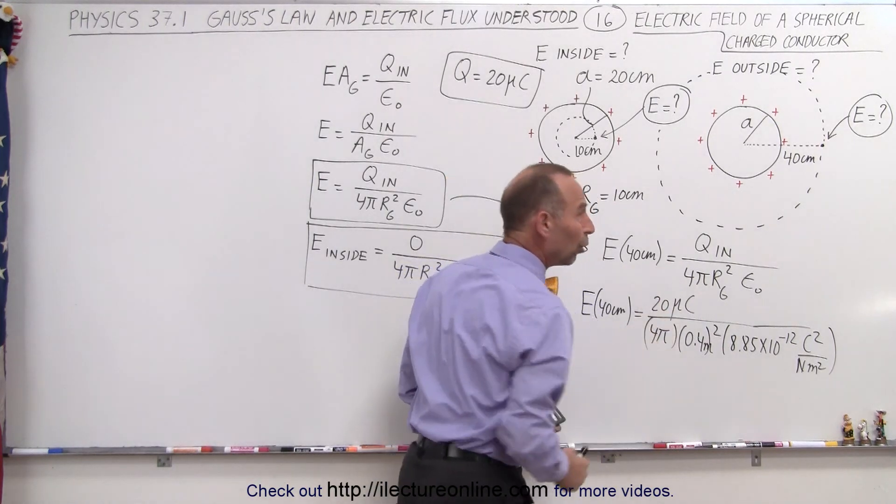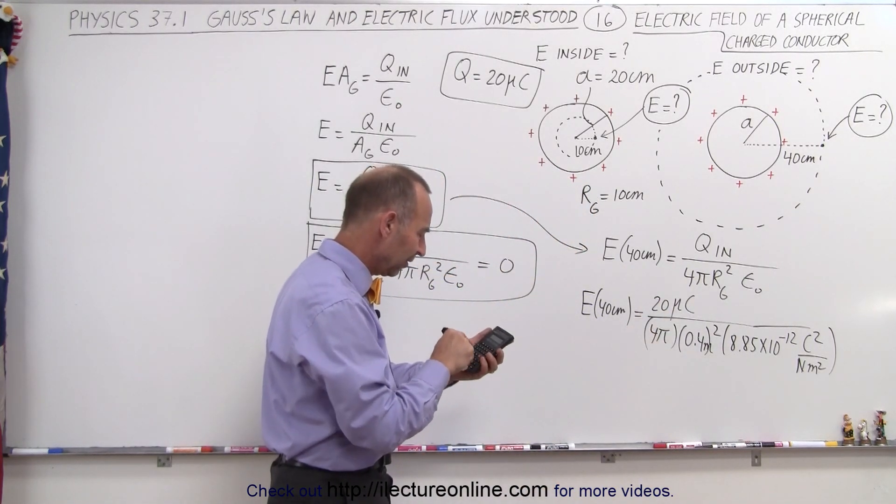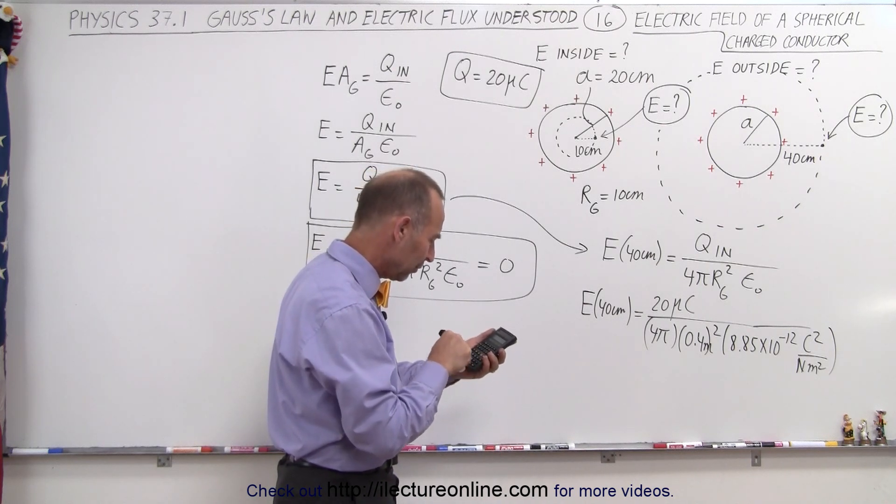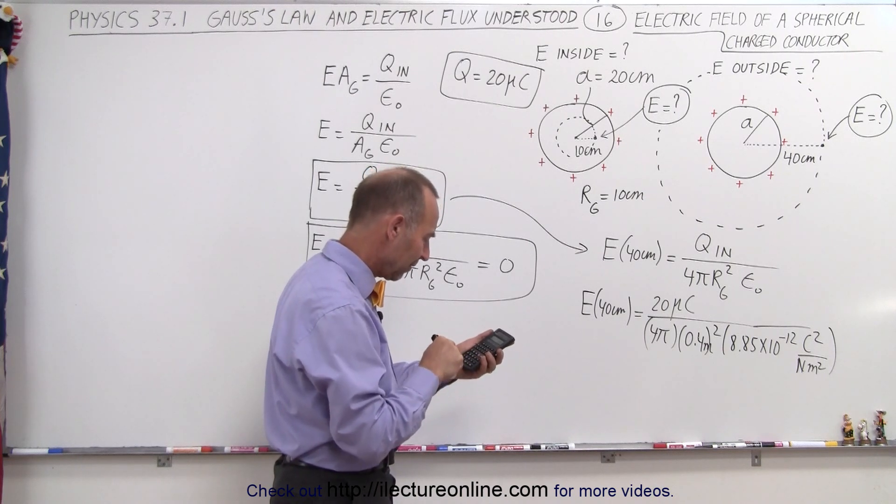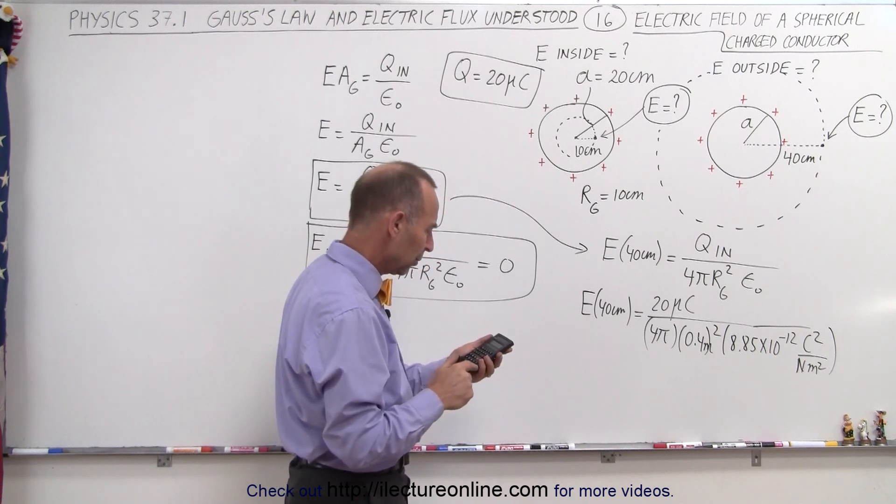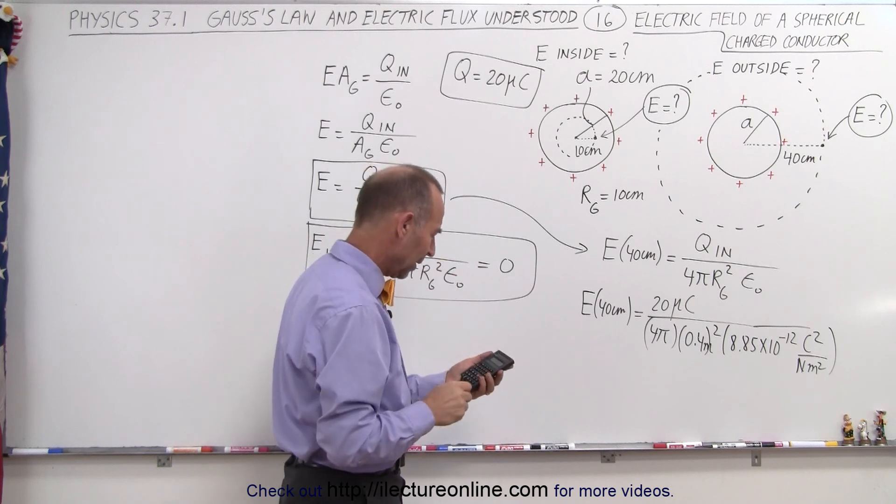Remember that microcoulombs is 10 to the minus 6 coulombs, that's 20 times 10 to the minus 6, divided by 4, divided by pi, divided by 0.4 squared, and divide by 8.85 times 10 to the minus 12, and that gives us, I've got to do that one again.